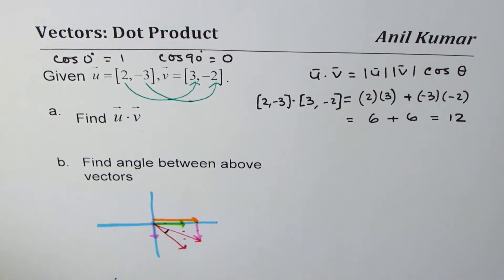So the dot product, which is always a scalar quantity, in our case the answer is 12. I hope this is absolutely clear.